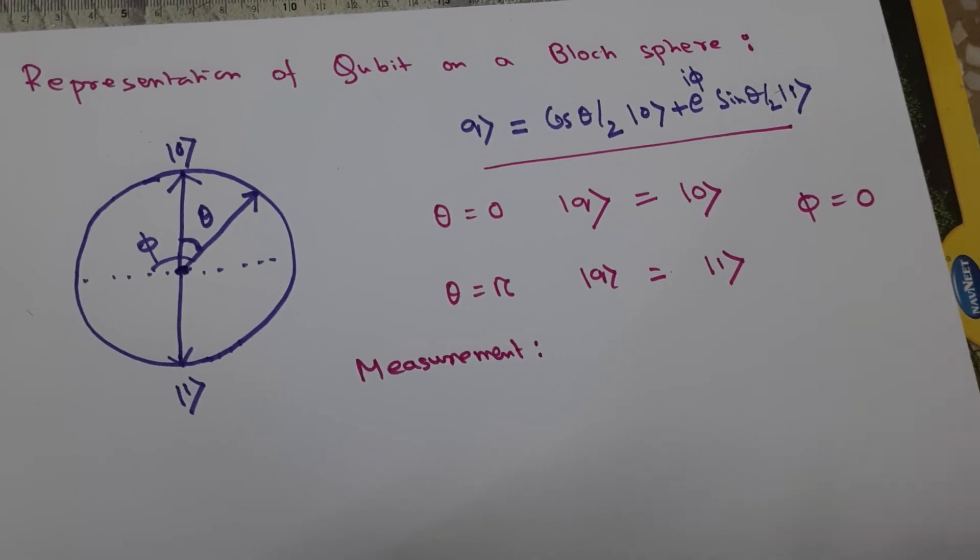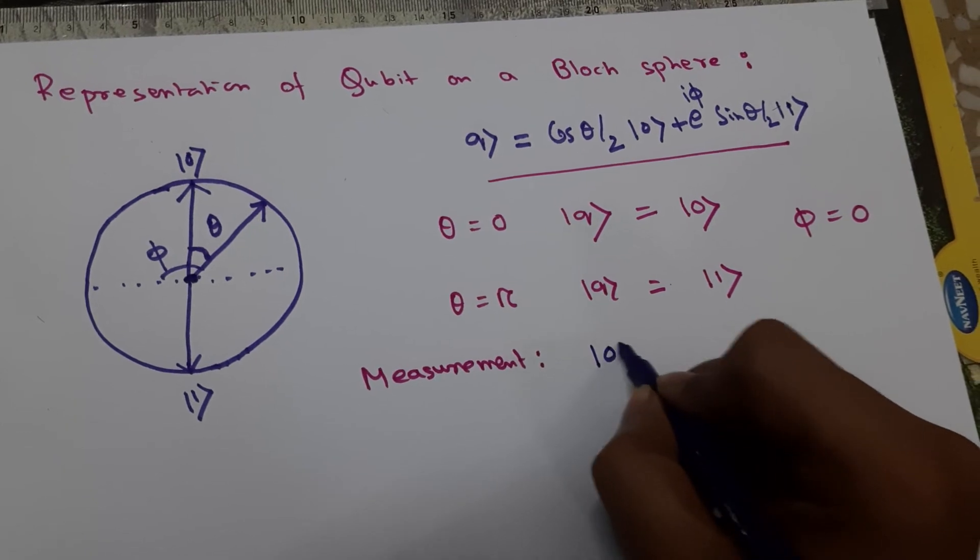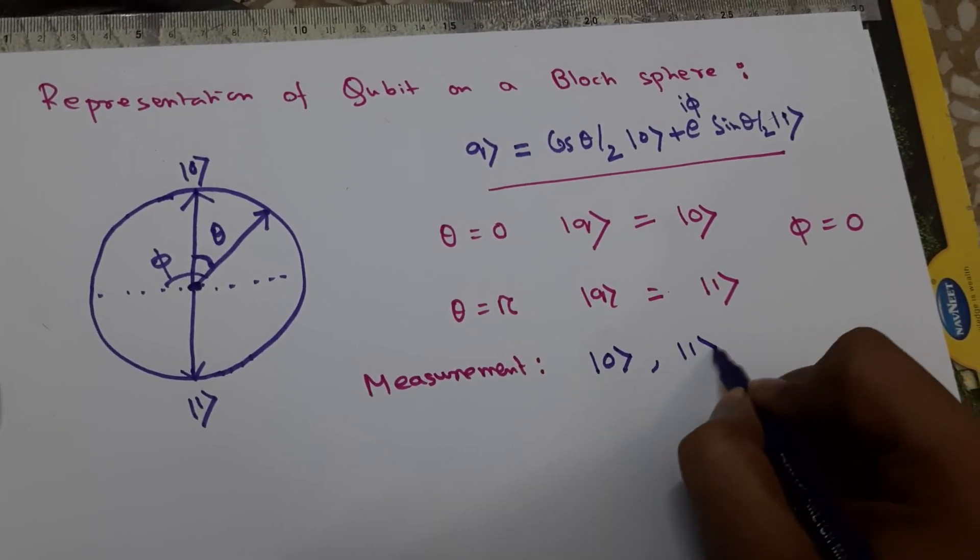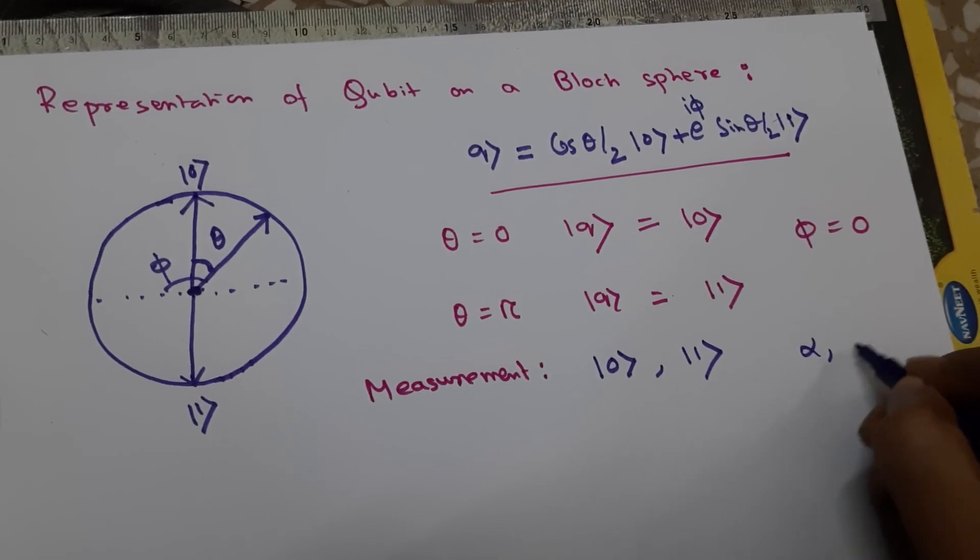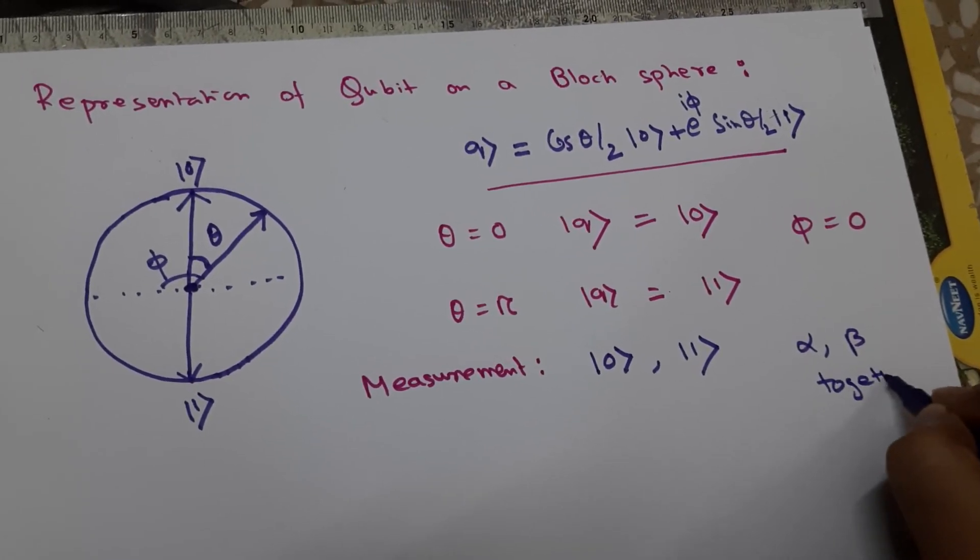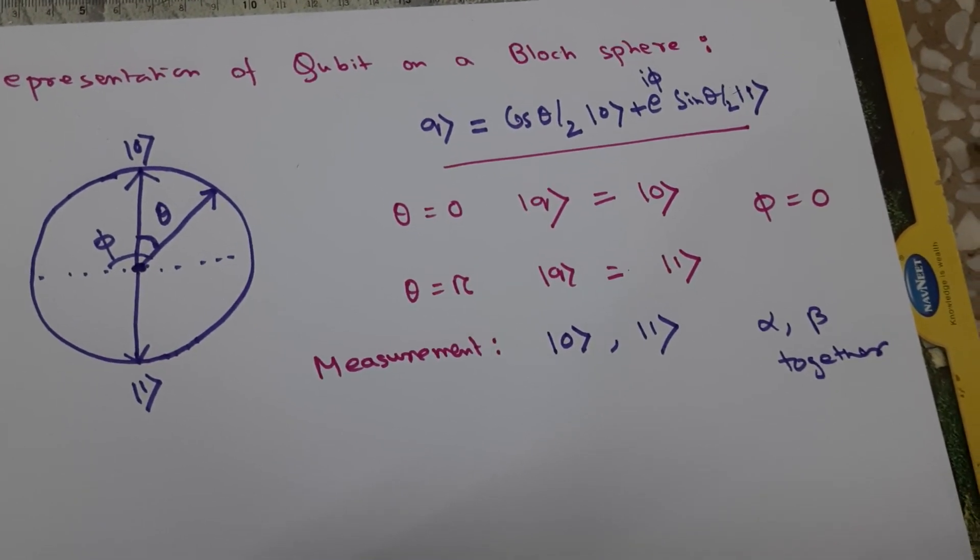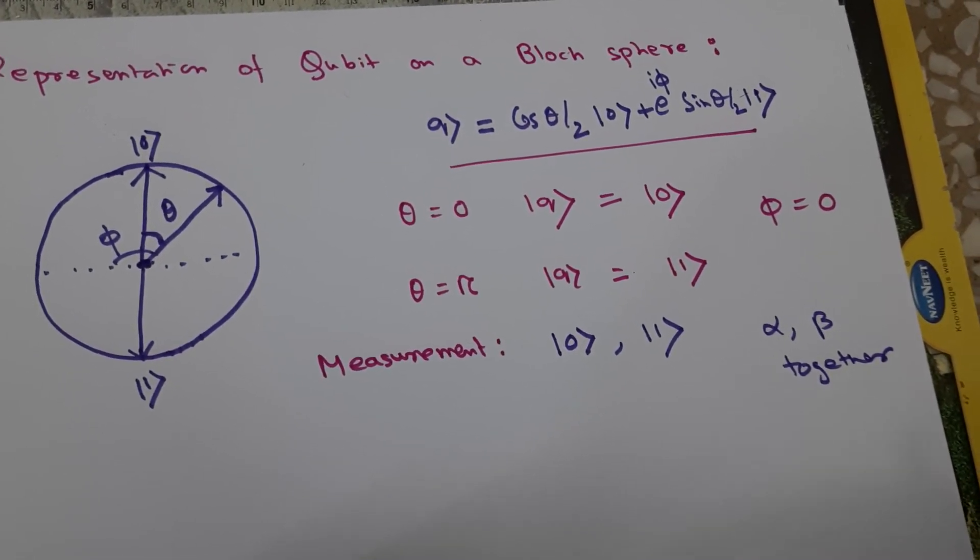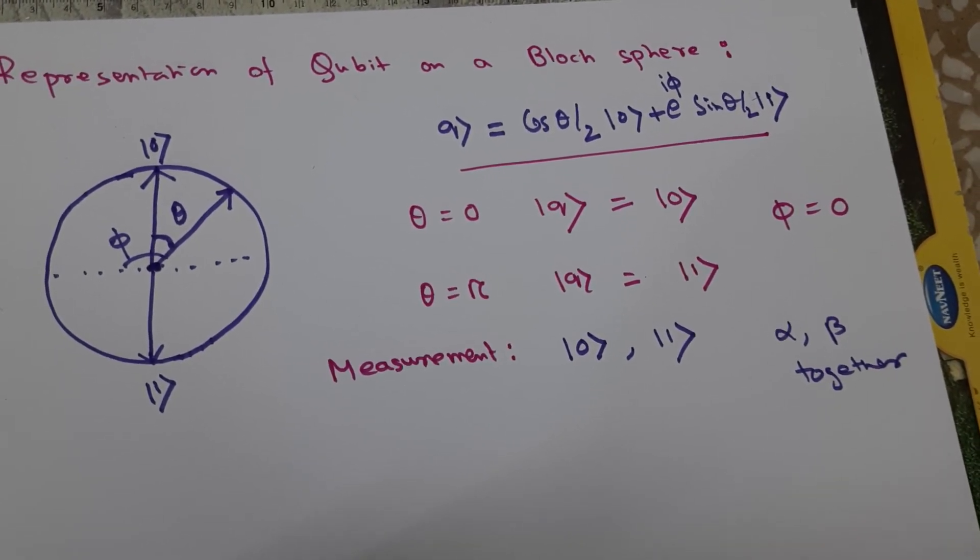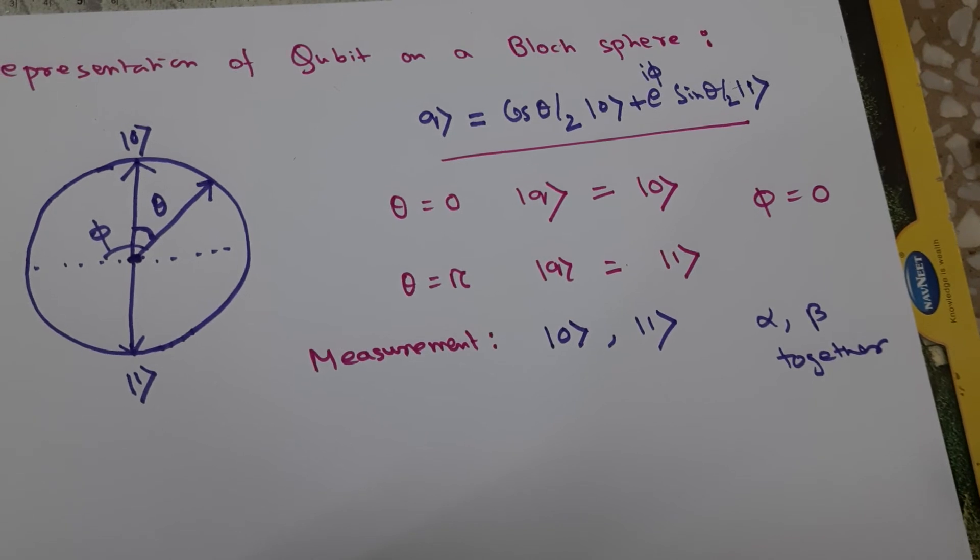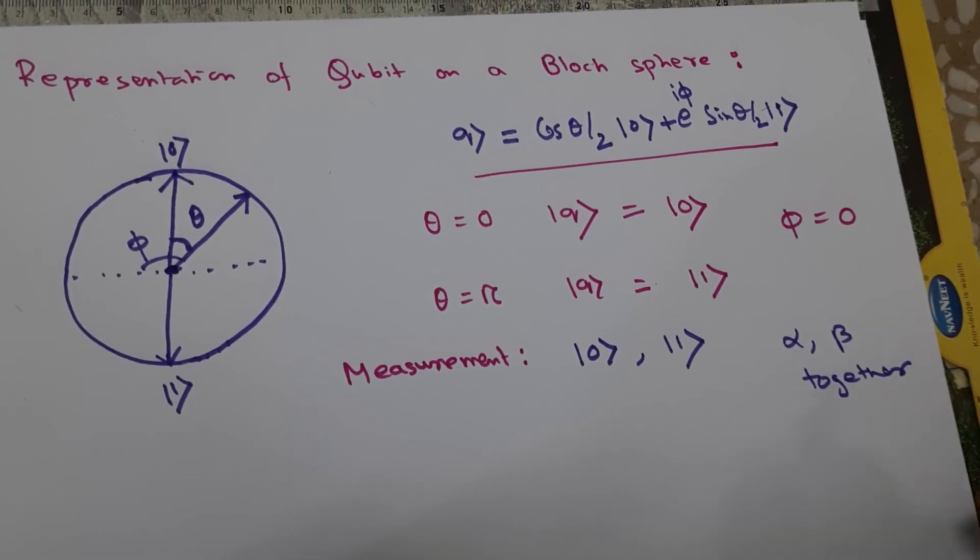One interesting thing about measurement is that when we measure a qubit, it will always collapse to a state of either |0⟩ or |1⟩. We can never get the information of alpha and beta together before measuring. It's not even a valid question what is the information if we don't measure. The concept of information only comes into the picture after measurement.